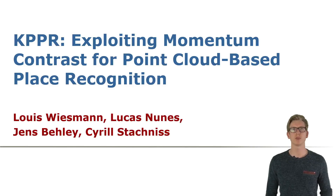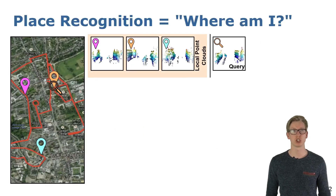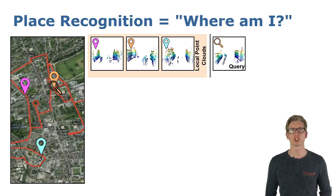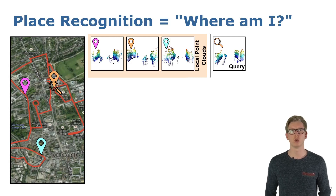Welcome. Today I will present KPPR, exploiting momentum contrast for point cloud-based place recognition. Place recognition answers the question: where am I, or haven't I seen this place before? It is one key concept for global localization or to find loop closure candidates in SLAM.